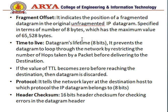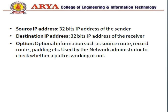Next is the protocol field, which tells the network layer at the destination to which protocol the IP packet belongs — it is 8 bits. Next is header checksum, which is 16 bits and helps in error checking. Then source IP address, which is 32 bits and is the address of the sender. Next is destination IP address, which is also 32 bits and is the address of the receiver. Finally, the optional field provides optional information like source route, record route, and padding.